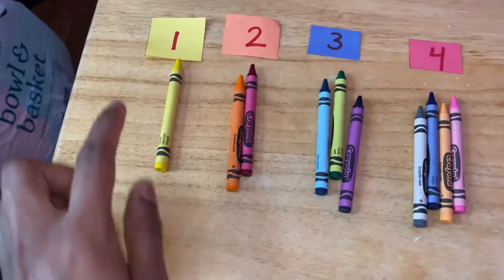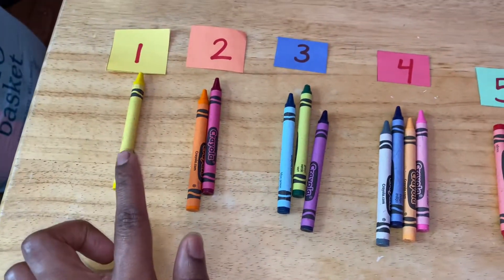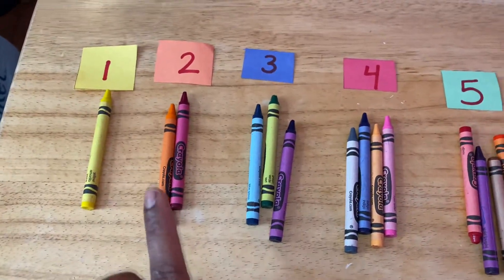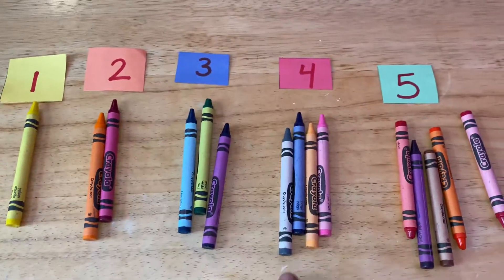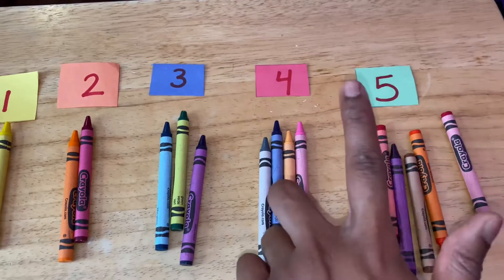So let's count again. 1 goes with 1 crayon. 2 goes with 2 crayons. 3 goes with 3 crayons. 4 goes with 4 crayons. And the number 5 goes with 5 crayons.